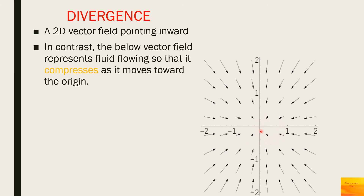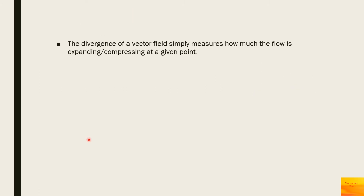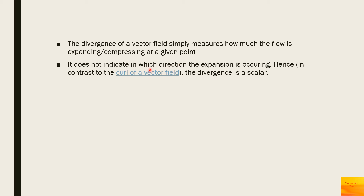Here the vector field represents a fluid flowing so that it compresses as it moves towards the origin. Since this compression is the opposite of expansion, the divergence of the vector field is negative. Divergence simply measures how much the flow is expanding or compressing at a given point; it does not indicate the direction. In contrast to the curl, the divergence is a scalar.